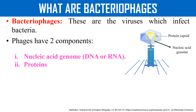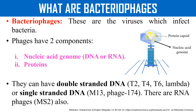The genetic material can either be DNA or RNA — they have a nucleic acid genome. In the case of DNA, it may be double-stranded, like in T2, T4, T6, and Lambda phage. It may also be single-stranded DNA, like in M13 and phage φ174. There are certain phages which have RNA as genetic material, like MS2 phage.